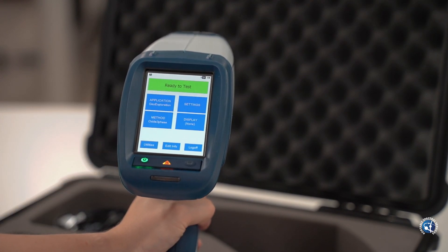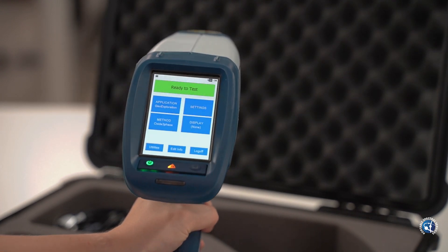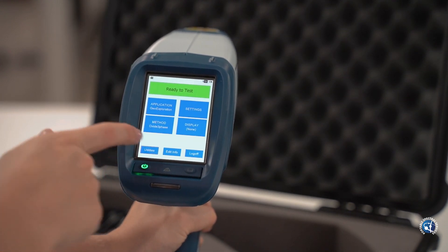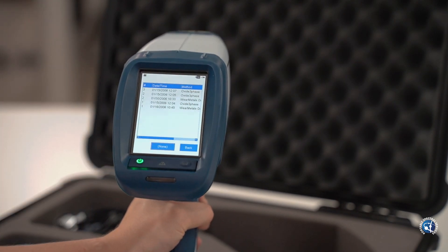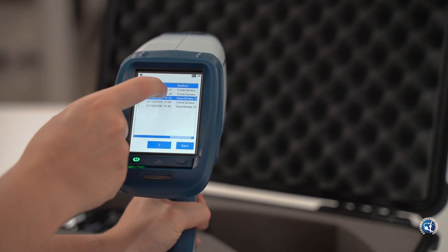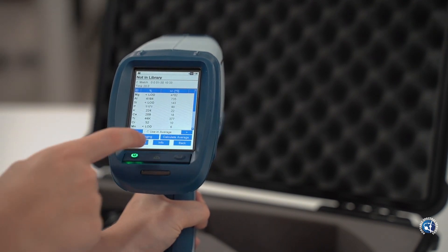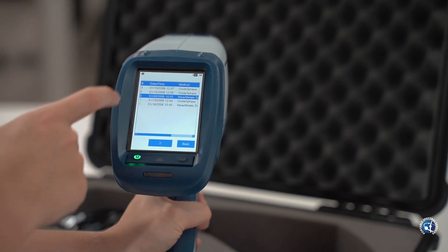To review results from the home screen, press utilities, results. Double click on an individual result to view. Use the arrows to toggle back and forth between results and if you want to exit, click back.